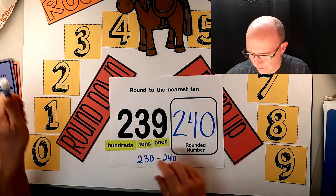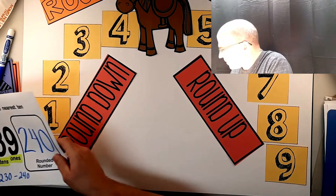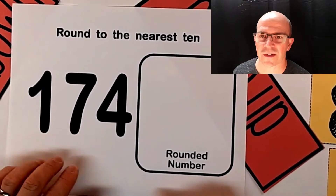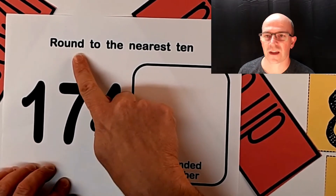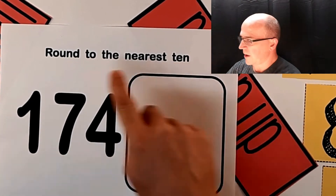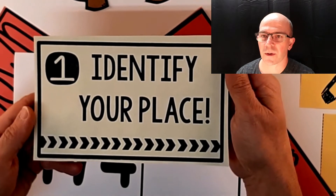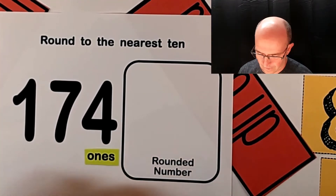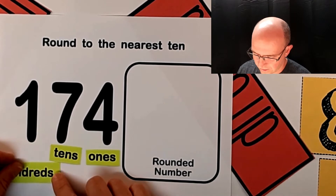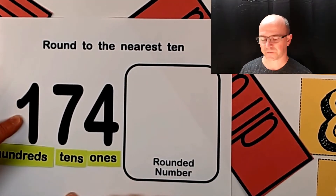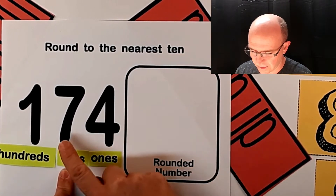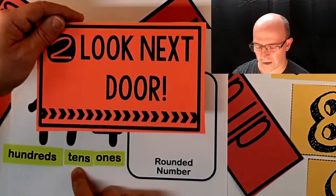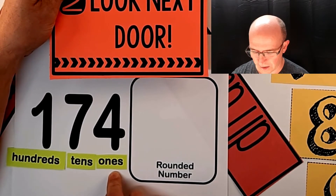Let's try another one. Here is the number 174. Our instructions say round to the nearest 10. Step number one says identify your place. We'll get our place value labels out again — this is our ones column, this is our tens, and this is our hundreds. We're rounding to the nearest 10, so this is the digit we're deciding upon. Step number two says look next door, so I'm moving over one place to the right and looking at my ones column.